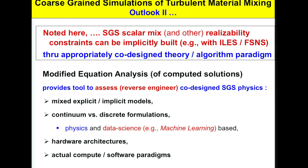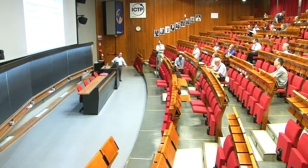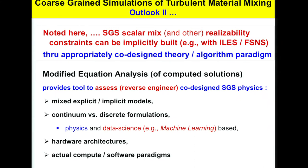One important issue noted is whether we have an appropriately co-designed theory and algorithm paradigm — something we have not normally looked at carefully and kind of found by accident. If you were doing true DNS resolving all necessary scales, none of this matters. But in practice with complex systems and under-resolved conditions, you need to address this — doing some with the algorithm and some with your simulation model. Modified equation analysis is really the right way to either assess or reverse-engineer the co-design sub-scale physics.